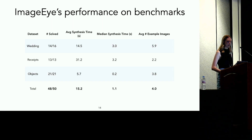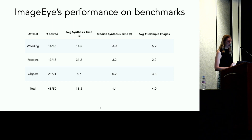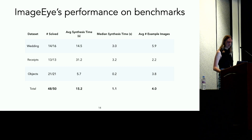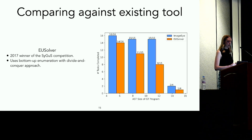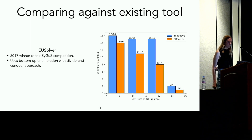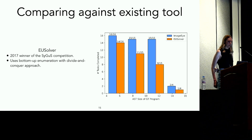ImageEye's results on the benchmarks are as follows. Across all benchmarks, ImageEye could solve 48 out of 50 tasks. The two failed tasks were the most complex in terms of AST size, and ImageEye timed out on these. Among the successful tasks, the average synthesis time was about 15 seconds, while the median synthesis time was just over one second, and the average number of example images needed was four. Compared to another enumerative synthesis tool called EU Solver, for easier tasks EU Solver performs almost as well as ImageEye, but as difficulty increases there's a growing gap, and overall ImageEye can solve 14 more tasks than EU Solver.